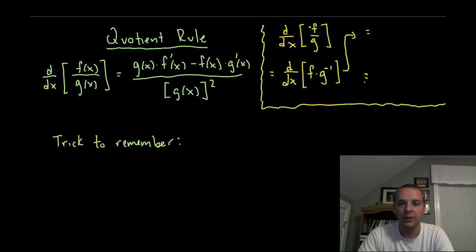If you had the derivative of f over g and wrote it as a product, f times g raised to the negative one, you're really just taking the derivative of a product instead of a quotient. So the derivative of this product would be, from the product rule, derivative of the first times the second plus the first times the derivative of the second.